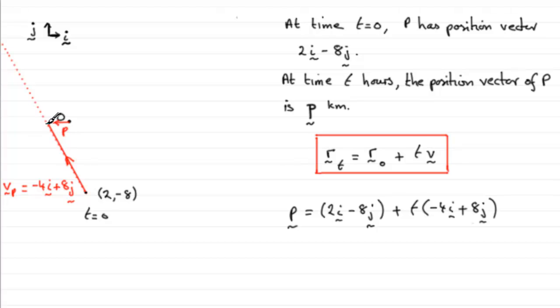After 2 hours, when t equals 2, p would be at a point, say up here. Because after every 1 hour, the boat goes this distance in that direction.